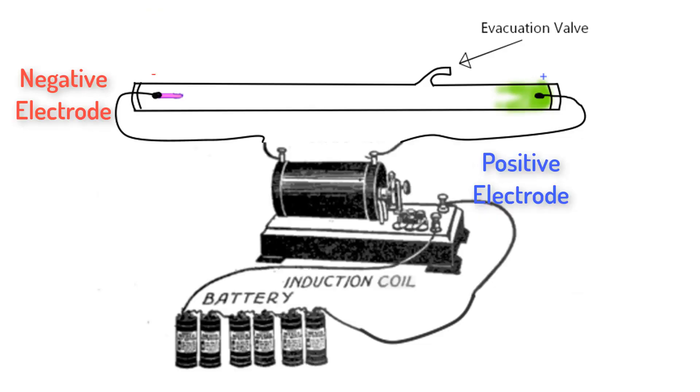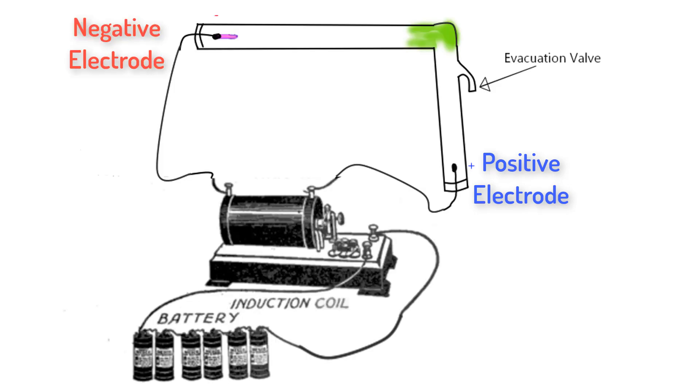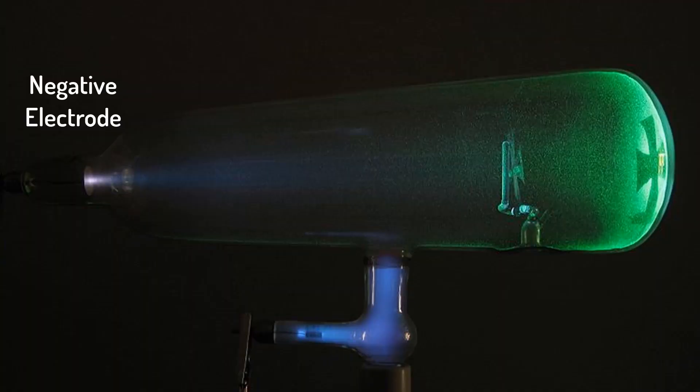He immediately used it on the Geissler tubes and found a surprising result. It seemed like there was a light coming from the negative electrode and it would hit the far glass and make it glow, either green or blue depending on the type of glass. He then proved that the light was coming from the negative electrode by making a special L-shaped tube and noticing that the glass glowed across from the negative electrode. He also found that if he put any object in its way, it would create a sharp shadow. Hittorf called these rays of glow and deduced, quote, any point of the cathode is a source of a cone of rays.